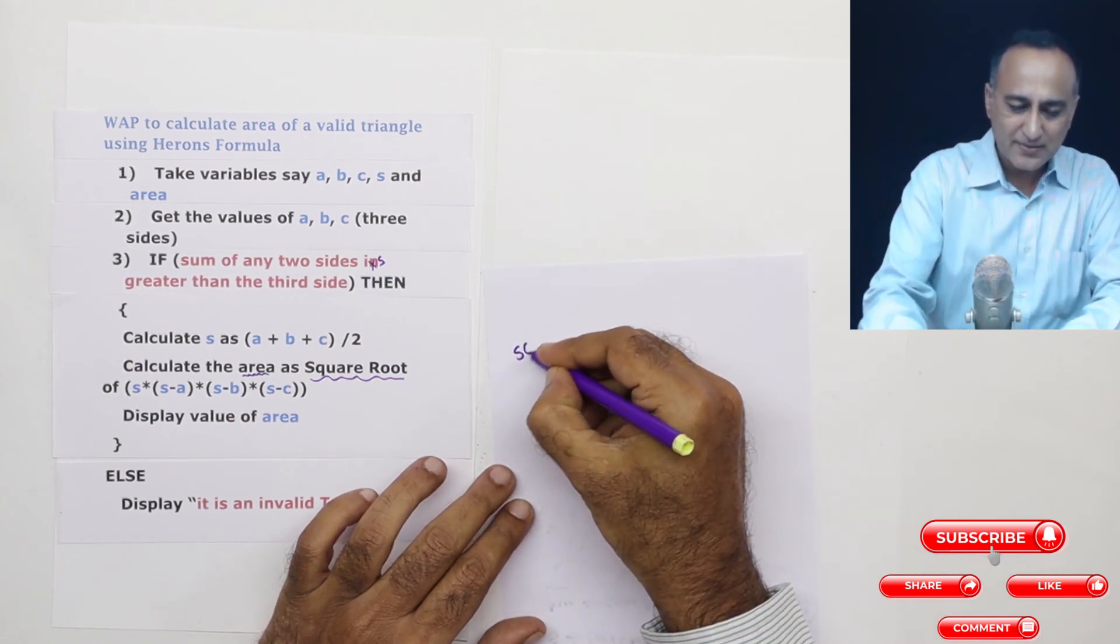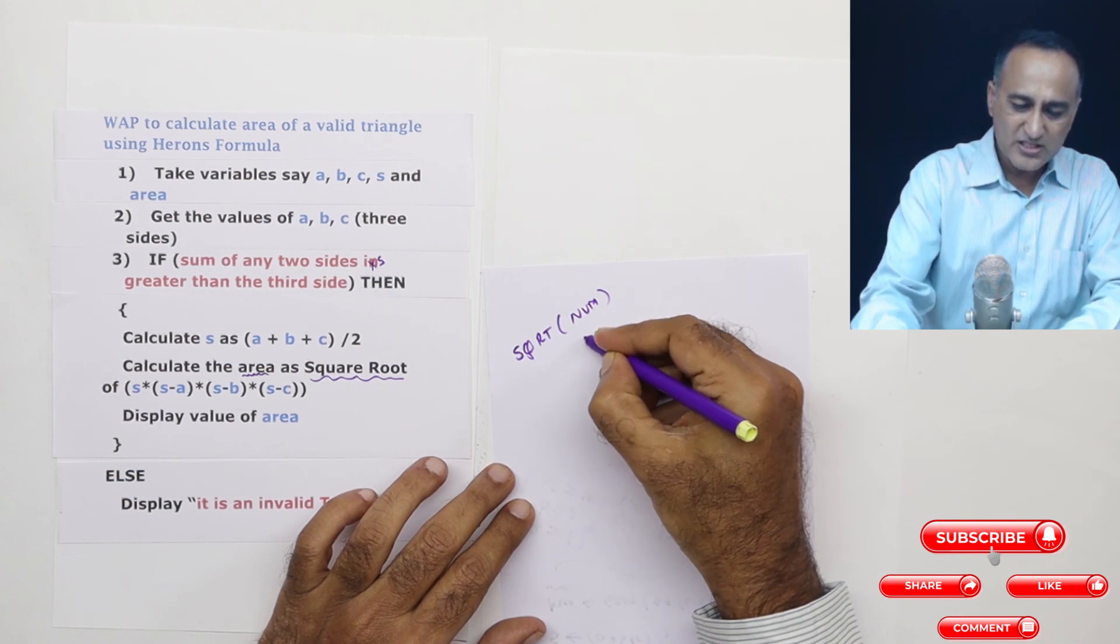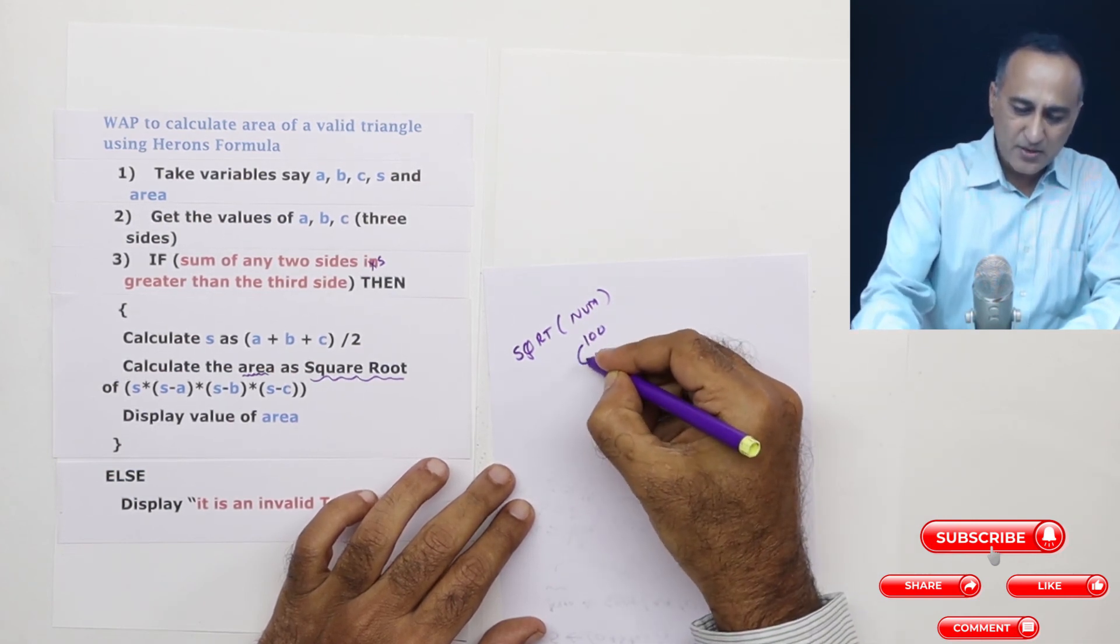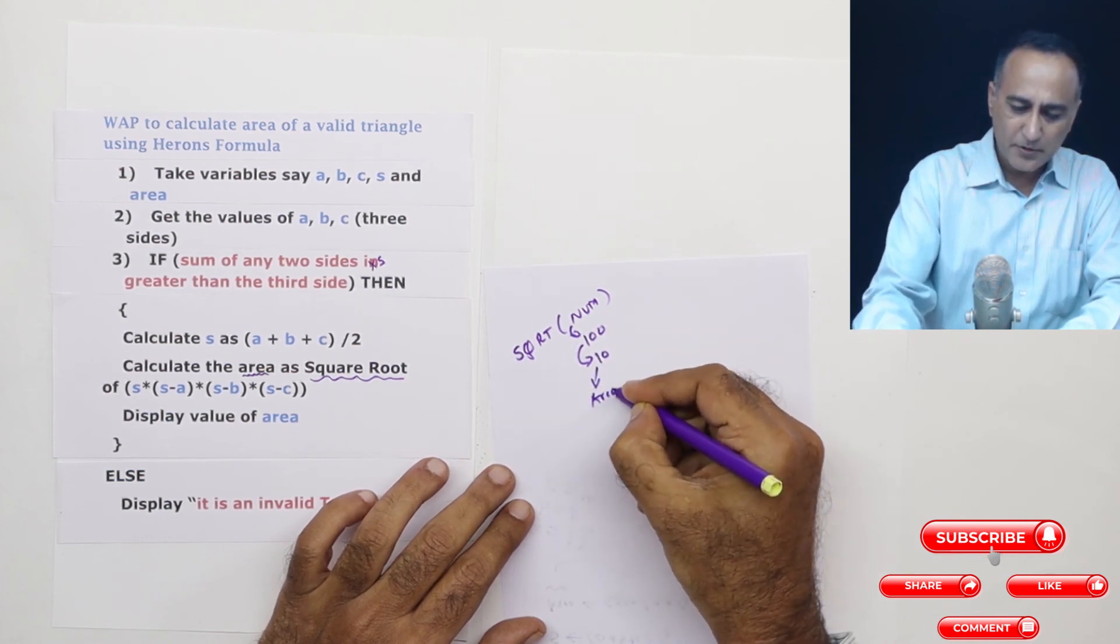So what is going to happen is it's going to say square root of some number. So this number for example could be 100. In that case the square root is going to be 10 and this 10 is going to get copied to area.